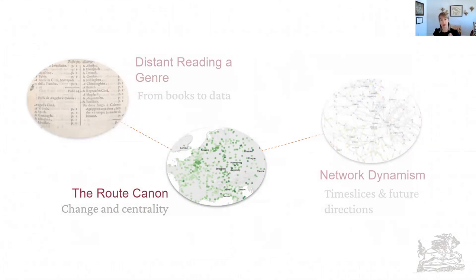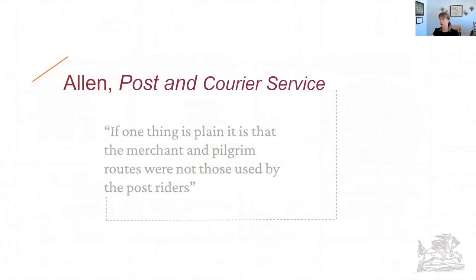Now I'll move on to talk about what that route canon actually is. An influential history of Europe's diplomatic courier states that if one thing is plain, it's that merchant and pilgrim routes were not those used by the post riders. However, by refocusing on the mental maps that were employed, published, and sold by postal professionals among others, we see that pilgrimage and mercantile routes continue to exercise conceptual power, even in itineraries that were specifically postal in nature. To this end, I use betweenness and eigenvector centrality to illustrate which cities are important within the network by virtue not just of the quantity, but the quality of their ties.